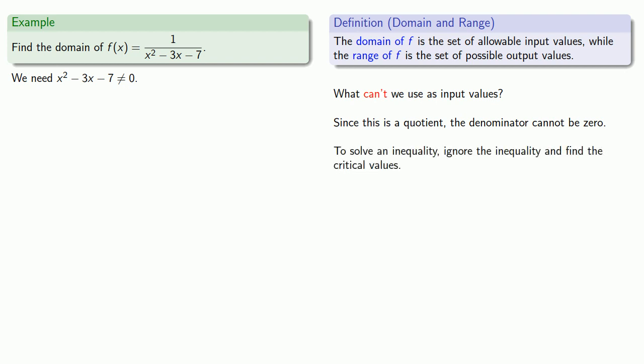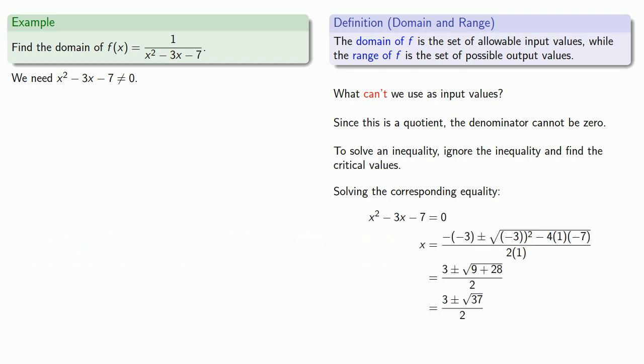Solving the corresponding equality, giving us our critical values 3 plus or minus square root of 37, the whole mess over 2.